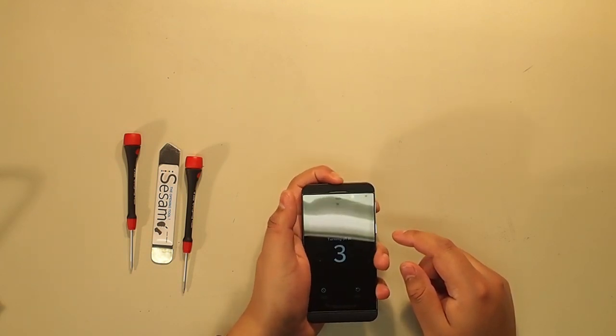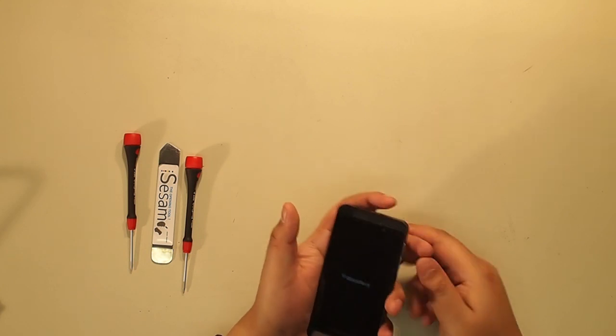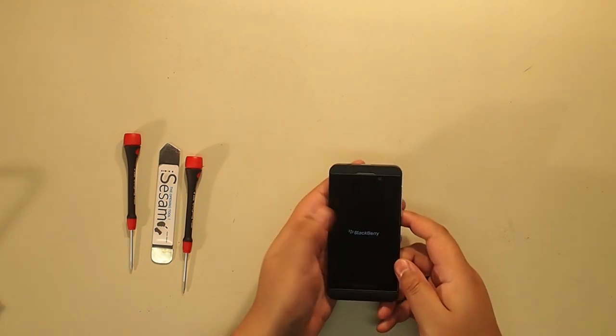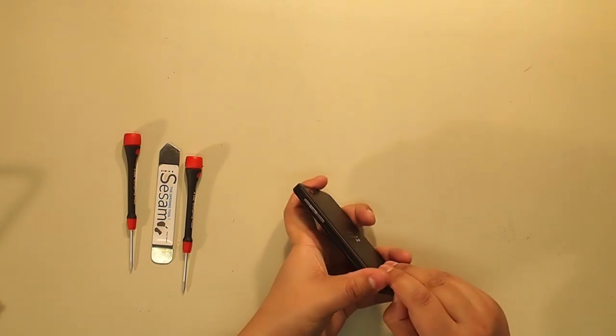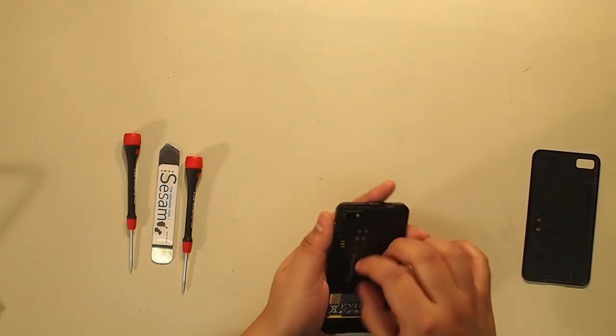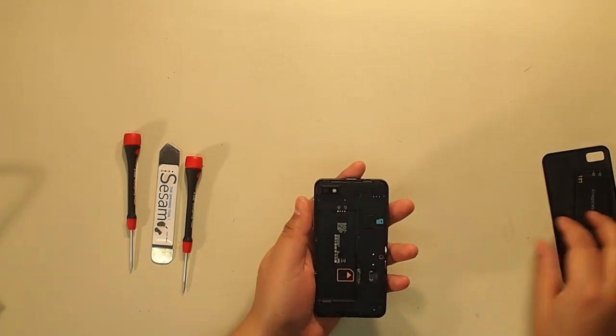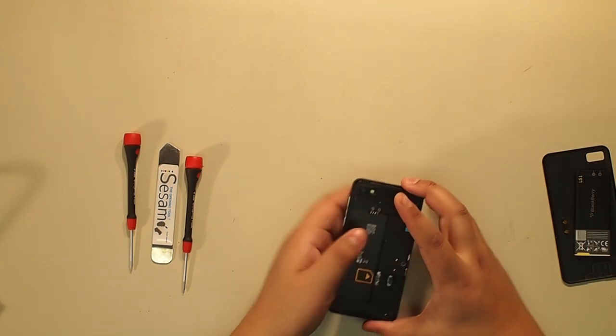We'll start by shutting off the phone. Take the battery door off, it just unclips here. Remove the battery. Take out the SIM card and memory card if there's one in there.